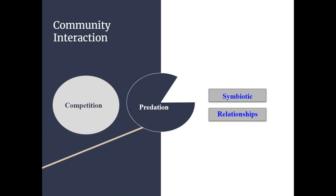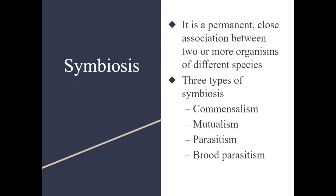To organize all the information: we covered competition — species competing for the same resource at the same time — and predation, where one species hunts another. Now we're going to cover symbiotic relationships. Symbiotic relationships are long-term relationships between two or more organisms. There are four types we are responsible for: commensalism, mutualism, parasitism, and brood parasitism, which is a special subtype of parasitism.